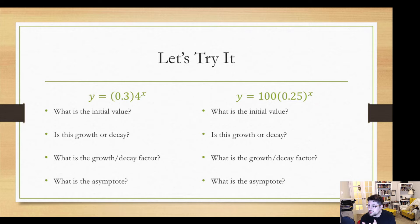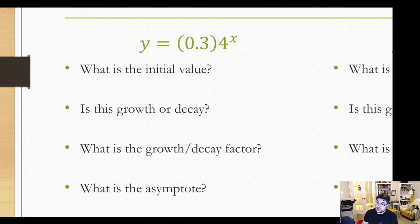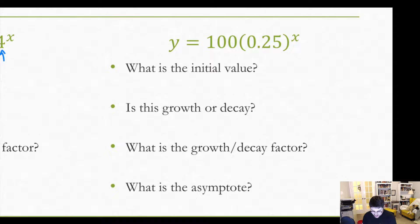So let's go ahead and try it with these two examples here. Feel free to pause the video, try it on your own, see if you can get the same answers that I do. So this first one, the initial value would be 0.3. Our base here is 4. 4 is bigger than 1, so this is a growth factor and is growing by 4. Our asymptote is going to be y equals 0.